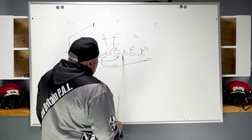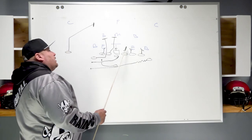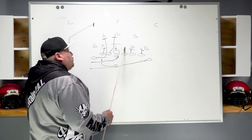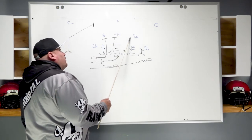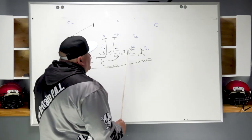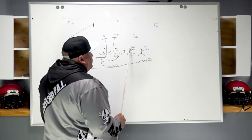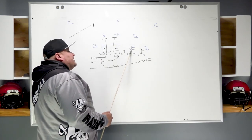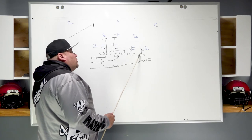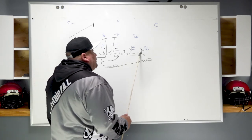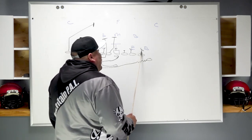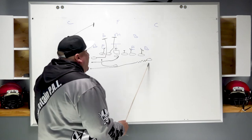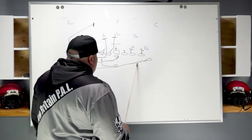Right guard will pop his feet in place — nothing violates either gap, he could look for work and fire on the backside backer. Right tackle gets his head inside the defensive tackle and turns him out. Same thing with the tight end — head inside the outside linebacker, turn him out.